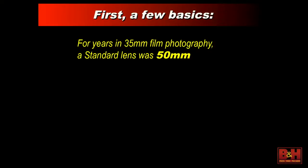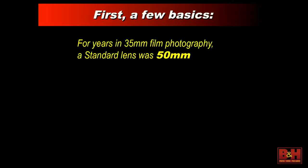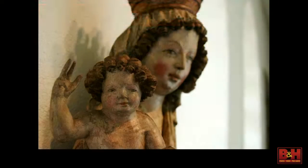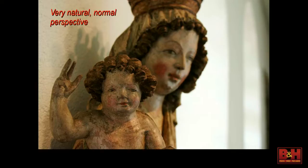Before we get going, I want to make sure we're all clear on the focal length numbers and what they mean. For those who started in film photography or are using a full-frame camera — a digital camera with an imaging sensor the size of a piece of 35mm film, like an EOS 6D or 5D — the focal length numbers on lenses meant a certain thing. A standard lens was a 50mm lens, which gave a very natural perspective.